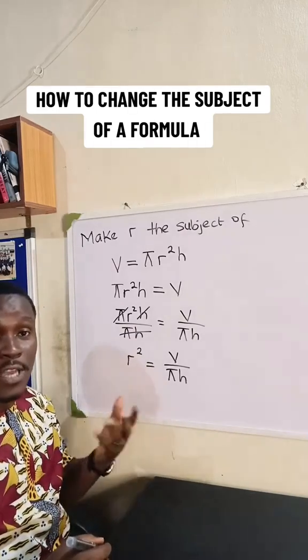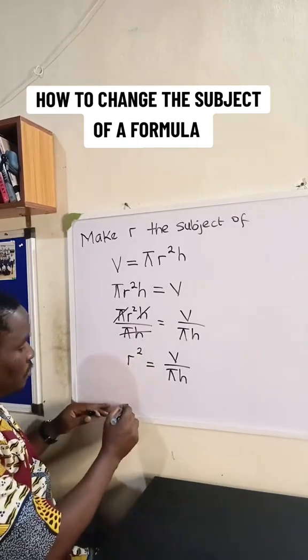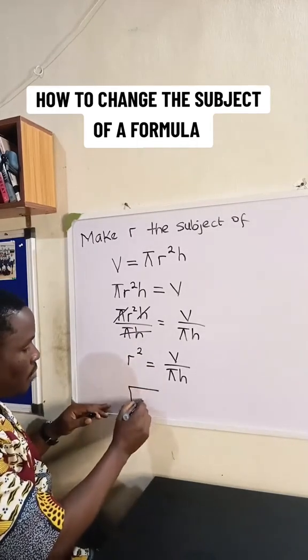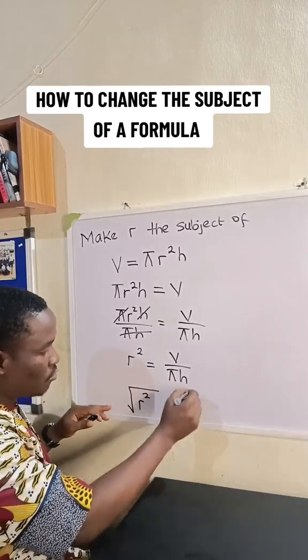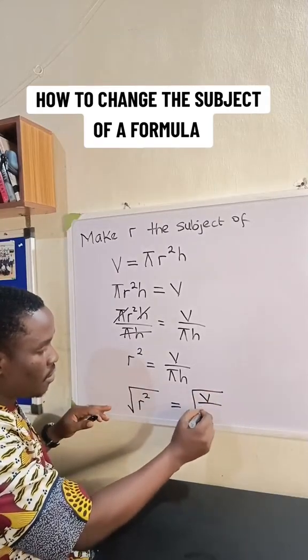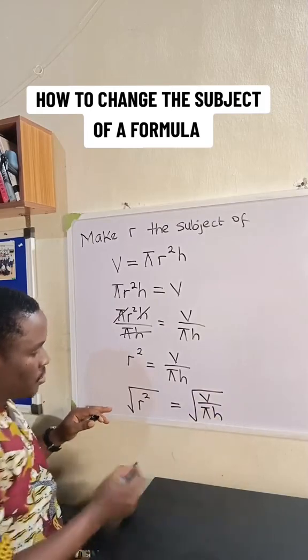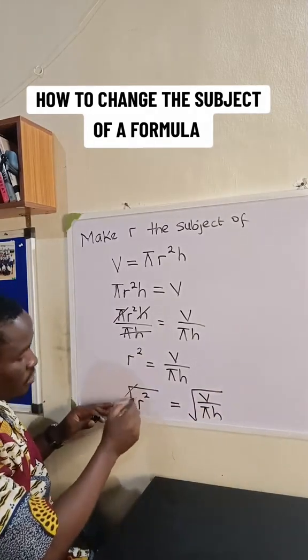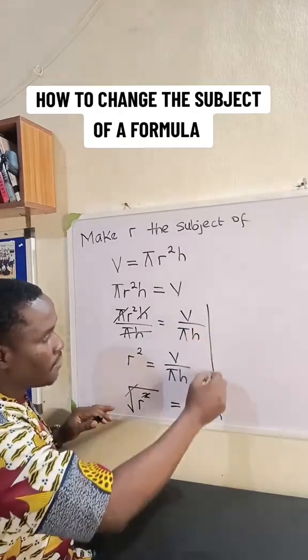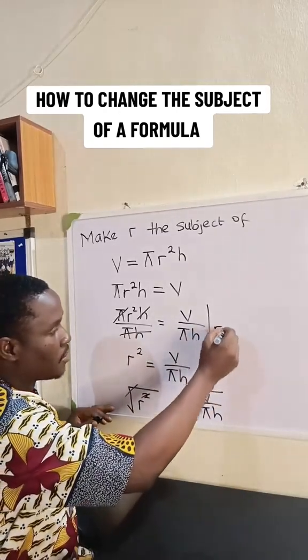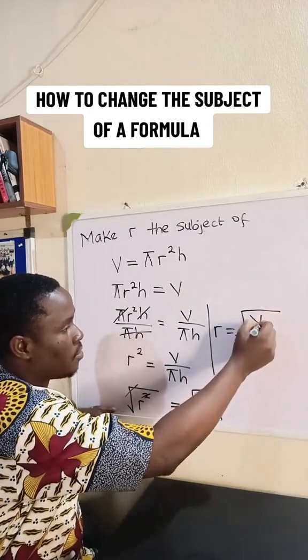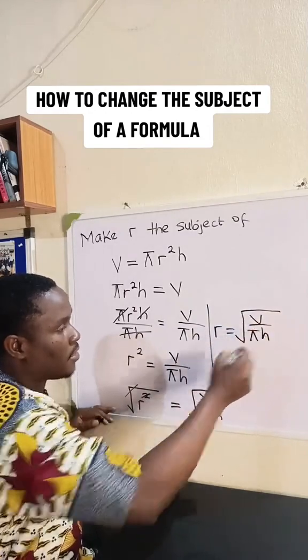So we get the square root of both sides of the formula. So this will give us square root of r squared is equal to square root of V all over pi h. So on the left, square root is going to cancel out square. Our final answer is going to be r is equal to square root of V all over pi h.